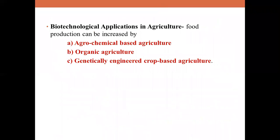Coming to biotechnological applications in agriculture — food production can be increased by three methods: agrochemical-based agriculture using chemical fertilizers or pesticides, organic agriculture using bio-fertilizers, biopesticides, and manure, and thirdly, genetically engineered crop-based agriculture where genetically modified organisms or specifically GM crops are used to increase yield.